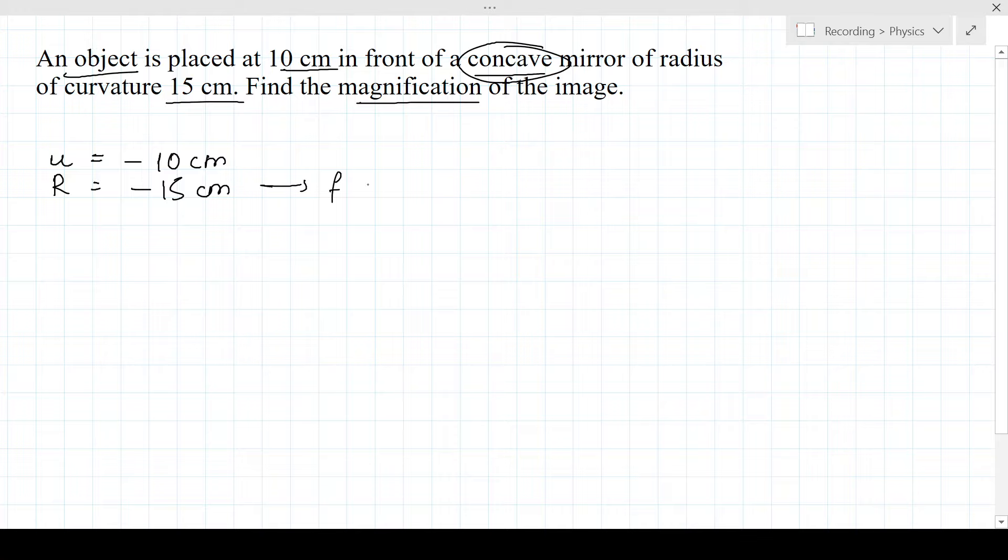That gives us the focal length is equal to radius by 2, that's equal to minus 15 by 2. Now we can apply the mirror formula.